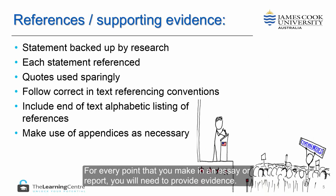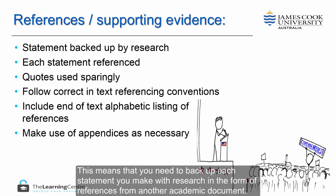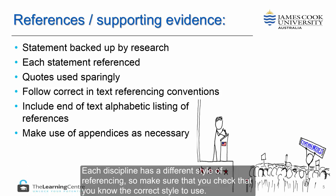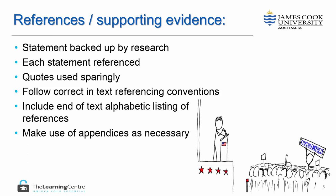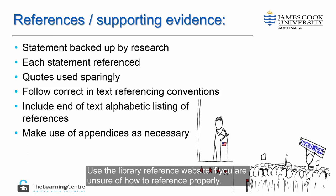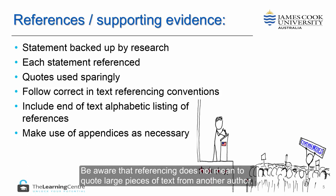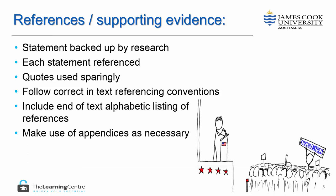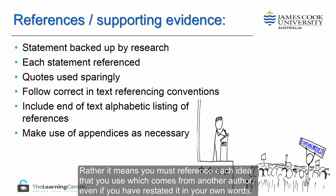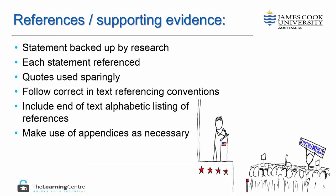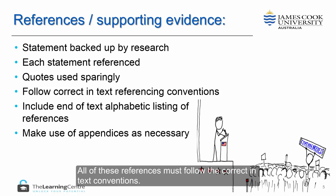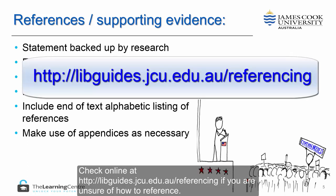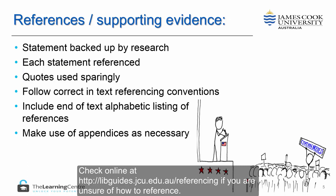For every point that you make in an essay or report, you will need to provide evidence. This means that you need to back up each statement you make with research in the form of references from another academic document. Each discipline has a different style of referencing, so make sure that you check the correct style to use. Use the Library Reference website if you are unsure of how to reference properly. Be aware that referencing does not mean quoting large pieces of text from another author — rather, it means you must reference each idea that you use which comes from another author, even if you have restated it in your own words. All of these references must follow the correct in-text conventions. Check online at libguides.jcu.edu.au/referencing if you are unsure.